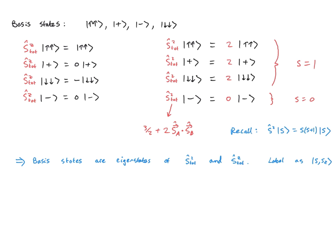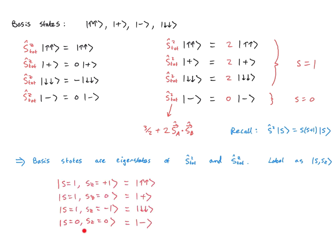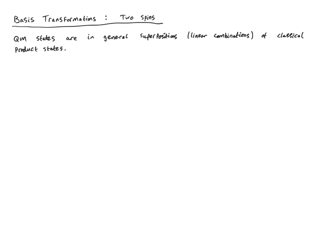These basis states are eigenstates of S_total² and Sz_total, so we can label them by the quantum numbers s and sz for the total spin. This is consistent with the rules for addition of angular momentum: combining two spin-half particles gives a combined system that is either spin-0 (singlet) or spin-1 (triplet).